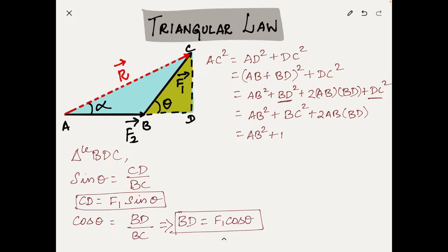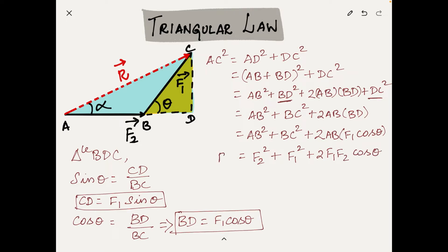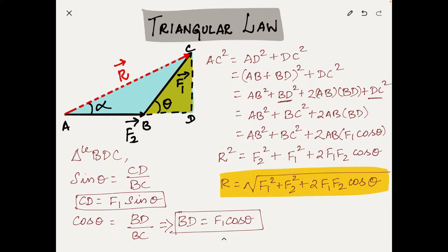Substituting gives AB² + BC² + 2·AB·F1·cos(θ). Replacing AB and BC with the magnitudes of F2 and F1 respectively, we get F2² + F1² + 2·F1·F2·cos(θ) = R². We don't want R² — we just want the magnitude of the resultant vector. So R is equal to the square root of F1² + F2² + 2·F1·F2·cos(θ). With this formula, we can calculate the magnitude of our resultant force R.